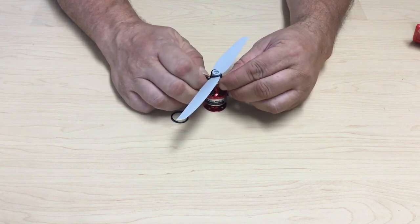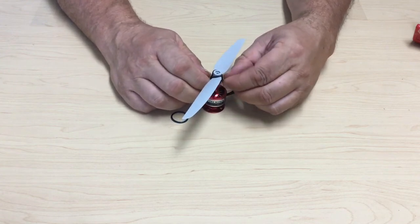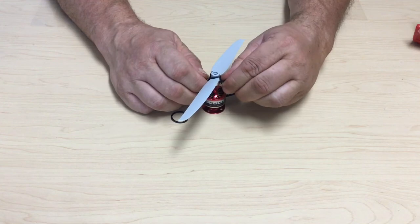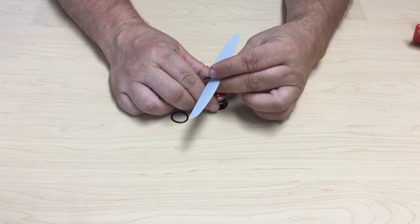Start with one side, screw it all the way in until it's tight, and then the other side. Now the prop saver is secure on the shaft.